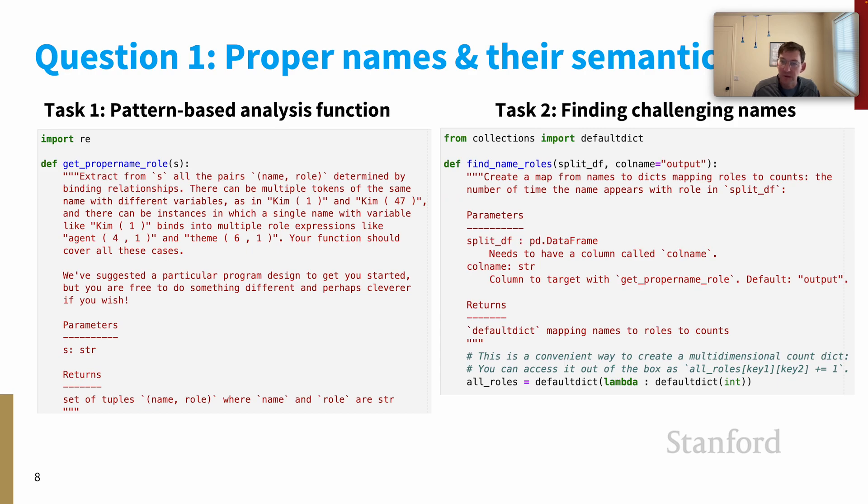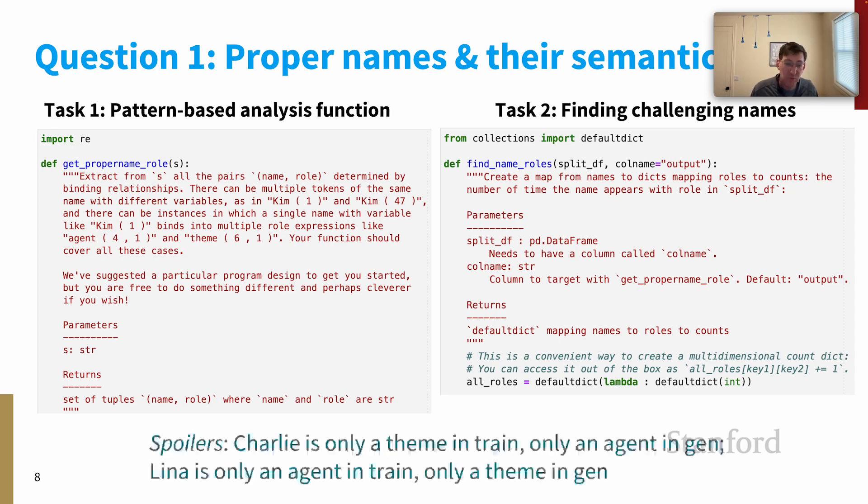And then for task two, you write find_name_roles, which uses get_proper_name_roles to discover what roles different proper names are playing in the various splits that ReCOGS contains. And I'll just give you the spoiler now.